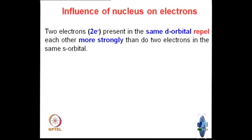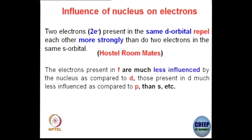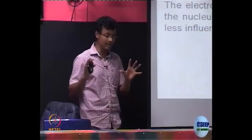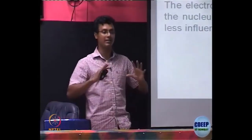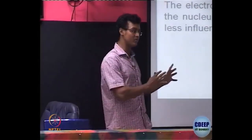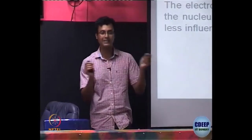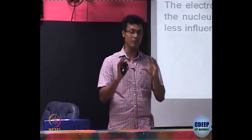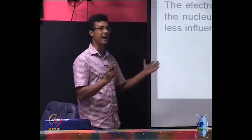Two electrons in D orbitals will repel each other more strongly compared to two electrons in the S orbital, because the S orbital is more engaged with the nucleus. Two electrons present in the same D orbital repel each other more strongly than two electrons in the same S orbital. Electrons in F orbitals are obviously much less influenced by the nucleus compared to D. So: S orbital electrons are most involved with the nucleus; P is a little less; D is further less; and F electrons are least involved with the nucleus. Therefore, the repulsion among F electrons will be the highest compared to any two electrons in any other orbitals.